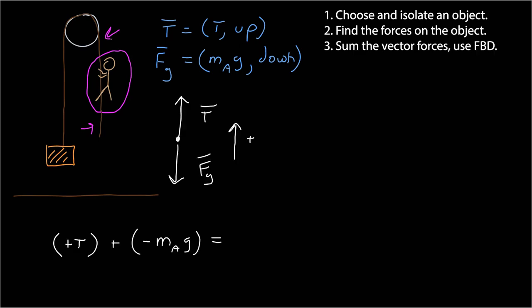And so I can just go ahead and continue on with my Newton's second law analysis. I'm going to sum the vector forces. I'm using a free body diagram. I have a dot representing my object, my forces in the appropriate direction: tension up, force of gravity down, and I'm choosing up to be the positive direction again.